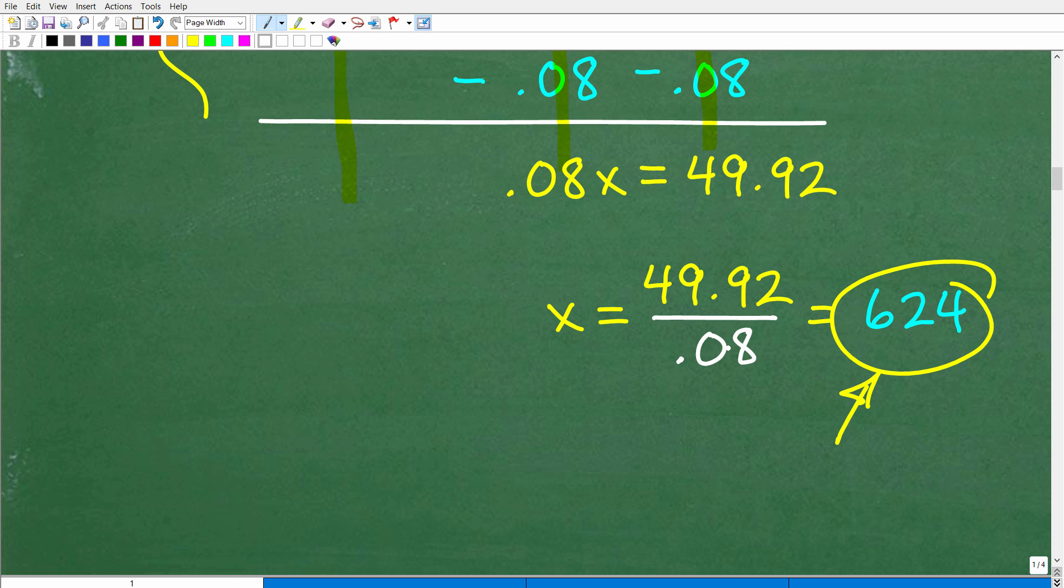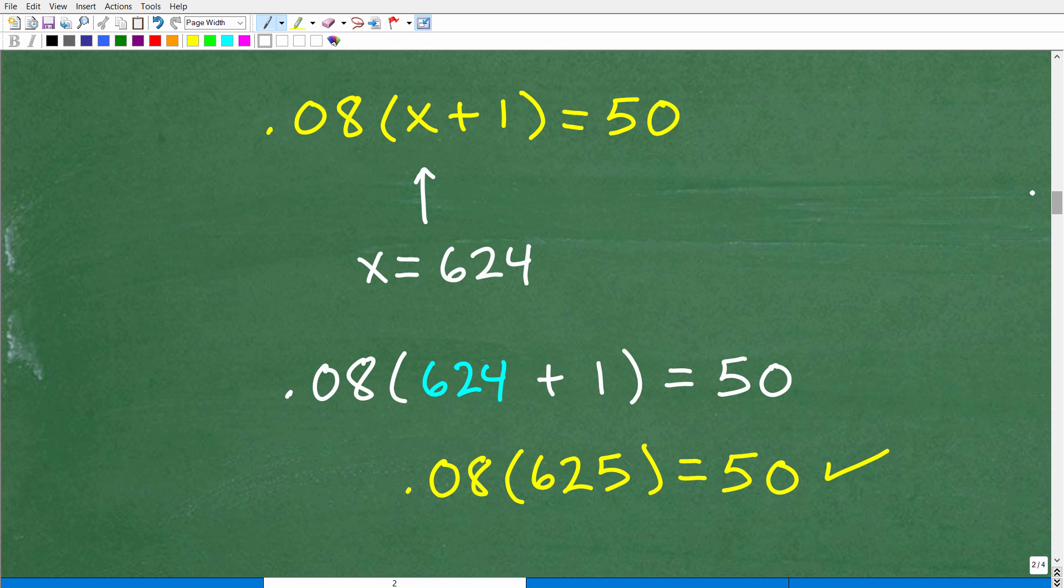Okay. So hopefully you got this right. But here's the deal. Let's suppose we did this whole thing and we have our answer 624. Can we check our work? Yes, we can. Let's go ahead and do this right now. So 8% of X plus 1 is 50. So 0.08 times X plus 1 is 50. We're saying that X is equal to 624. Well, let's replace this X with 624 and see if the left-hand side equals out to be equal to the right-hand side. So this would be the same thing as 0.08 times 624 plus 1. So 0.08 times 624 plus 1, which is the same thing as 625. If you do this in your calculator, you'll see that you'll end up with 50. So 50 equals 50. That is a true statement. This is how we can check our answers.